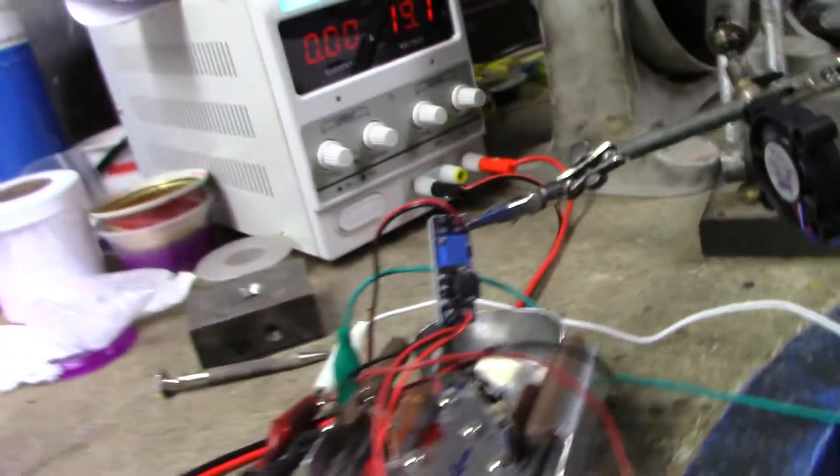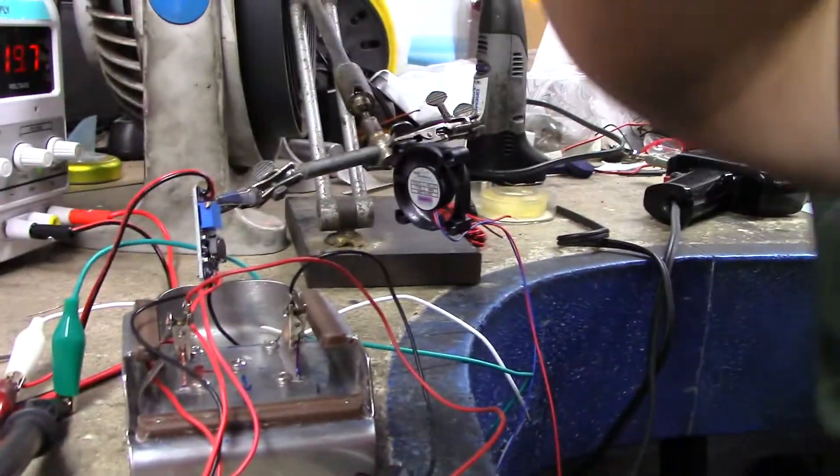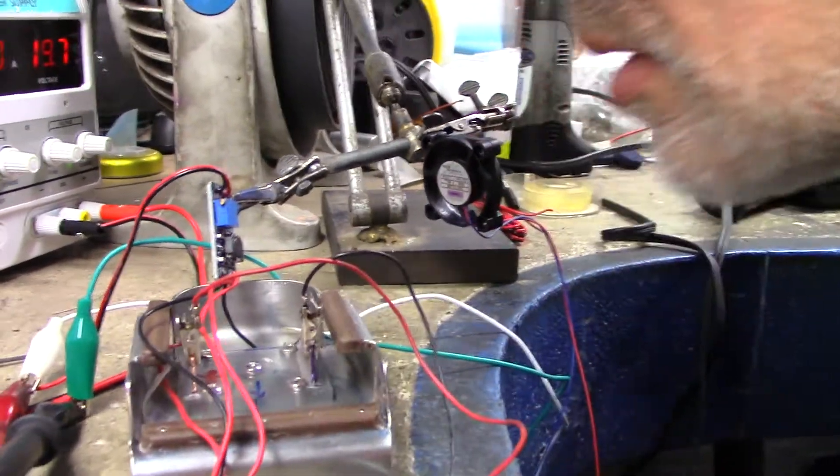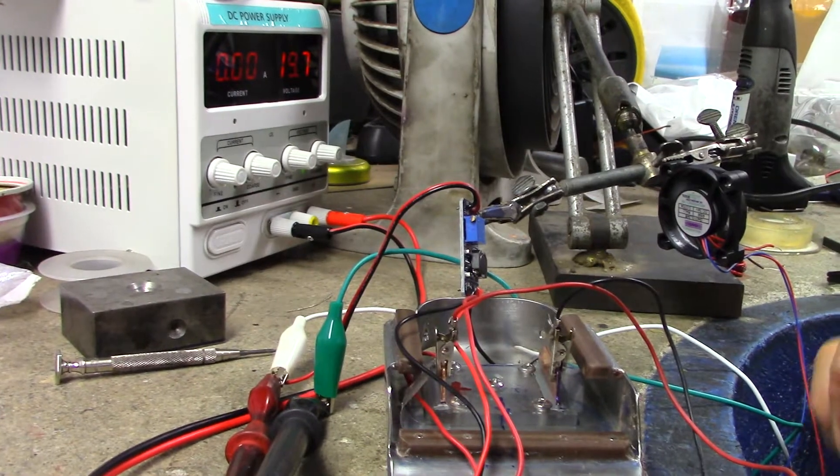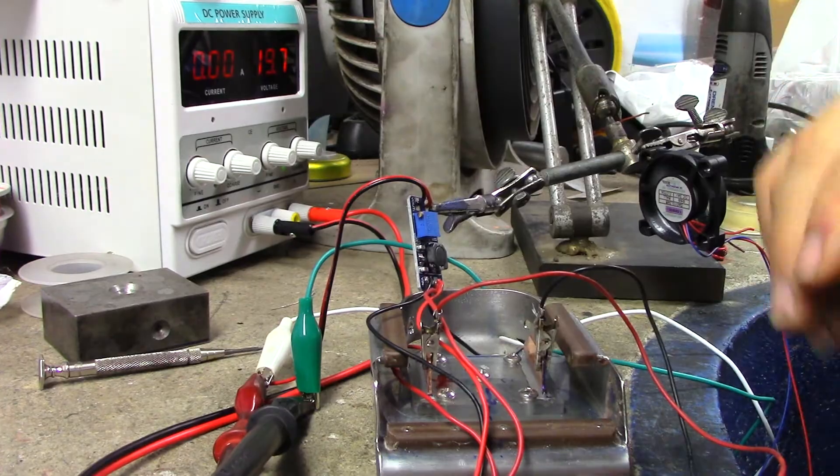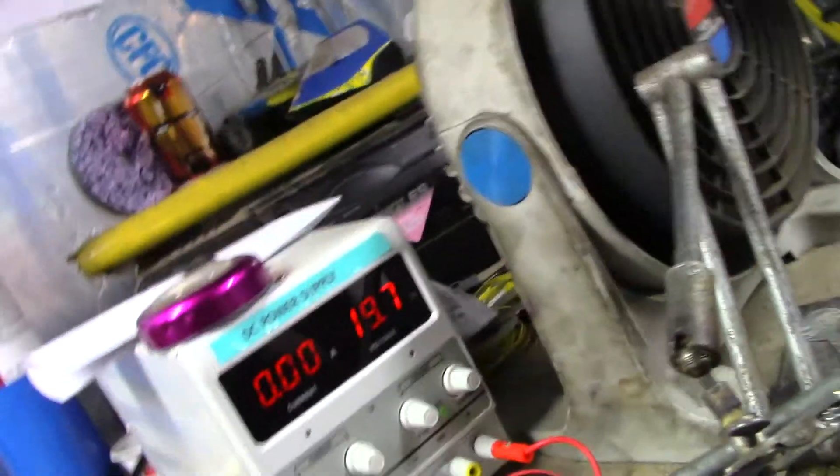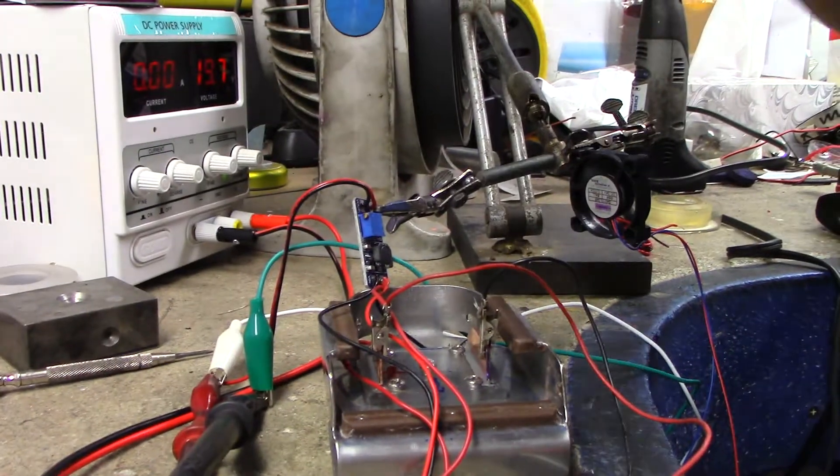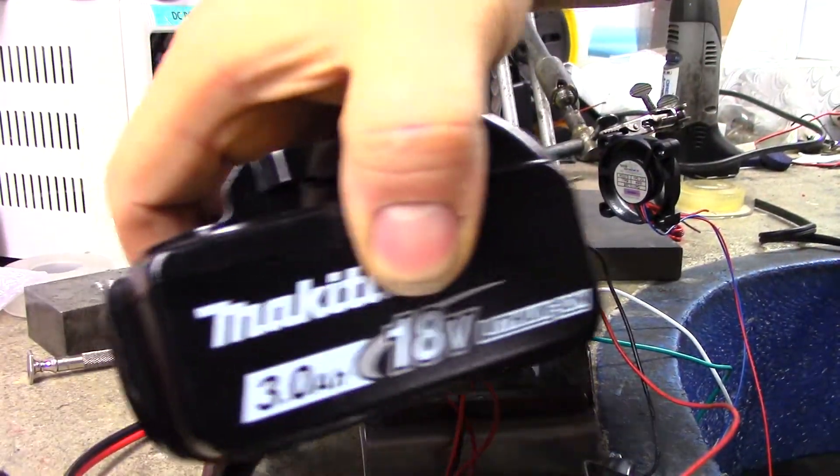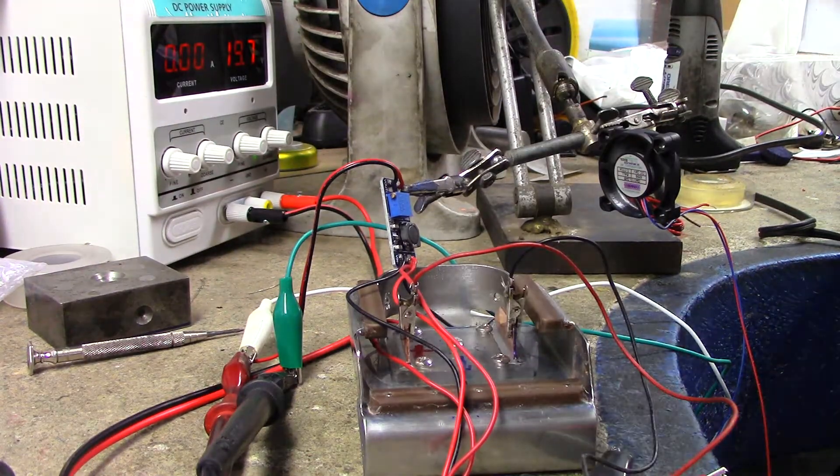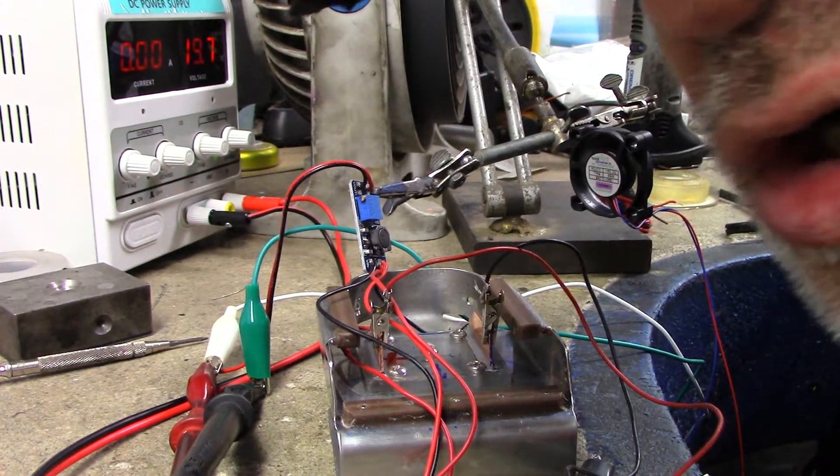And what I'm going to see now is if I can hook it up to the power supply here. The power supply set at 19.7 volts, which is the same as the Makita battery, and not get the magic smoke.